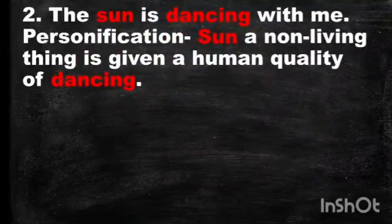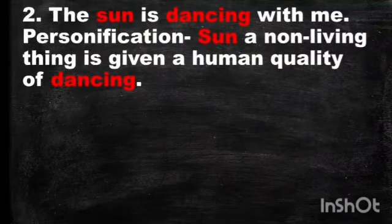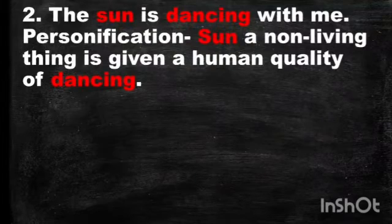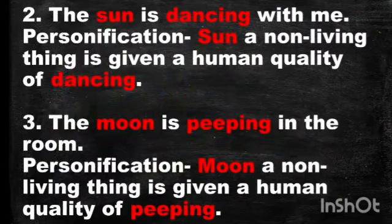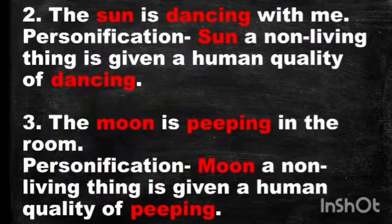Example number two: 'The sun is dancing with me.' Again, the given figure of speech is personification. The sun is a non-living thing, and it is given the human quality of dancing. Example number three: 'The moon is peeping in the room.' Personification — the moon is a non-living thing, and it is given the human quality of peeping. Peeping is a human quality, children.